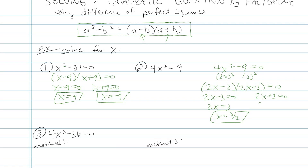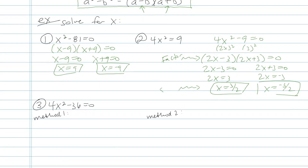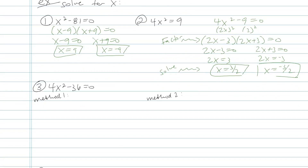A lot of times students get thrown off by the directions — they're not sure if they're supposed to go all the way to x equals something or just stop at factored form. The directions are the key. If the directions say factor, I would stop at factored form. But since the directions say solve, that means I need to have x equals something.